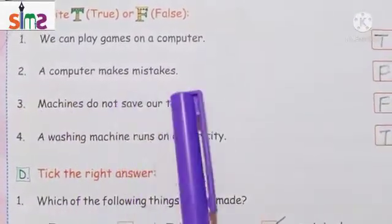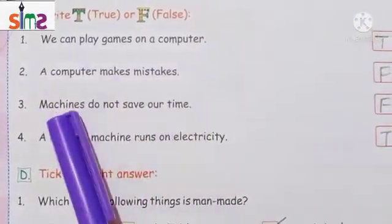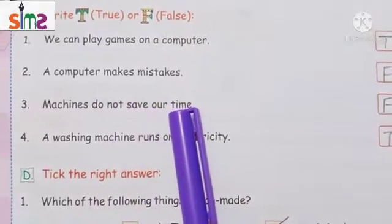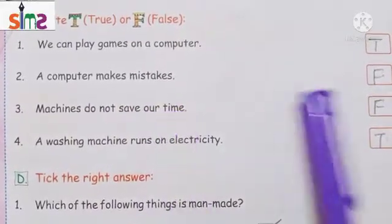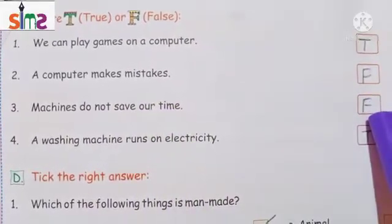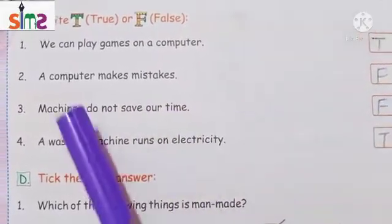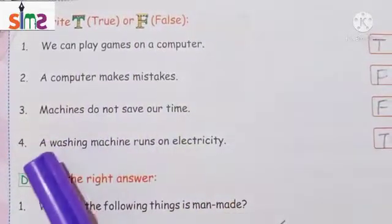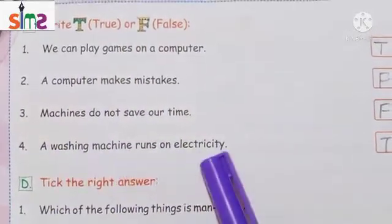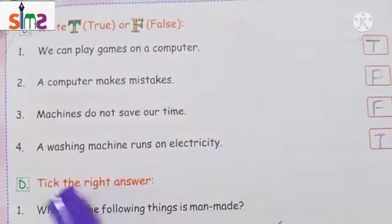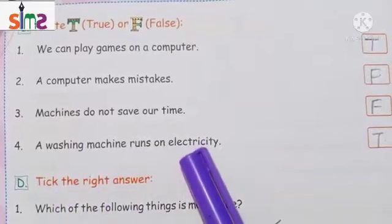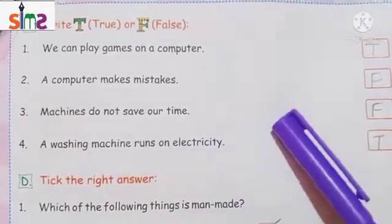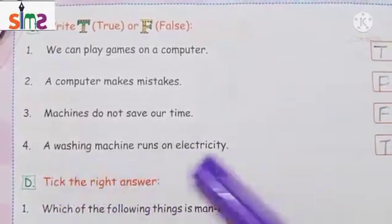The third true or false is: machines do not save our time. Machines do not save our time — we will write F. The fourth true or false is: a washing machine runs on electricity. This sentence is true because the washing machine runs on electricity.